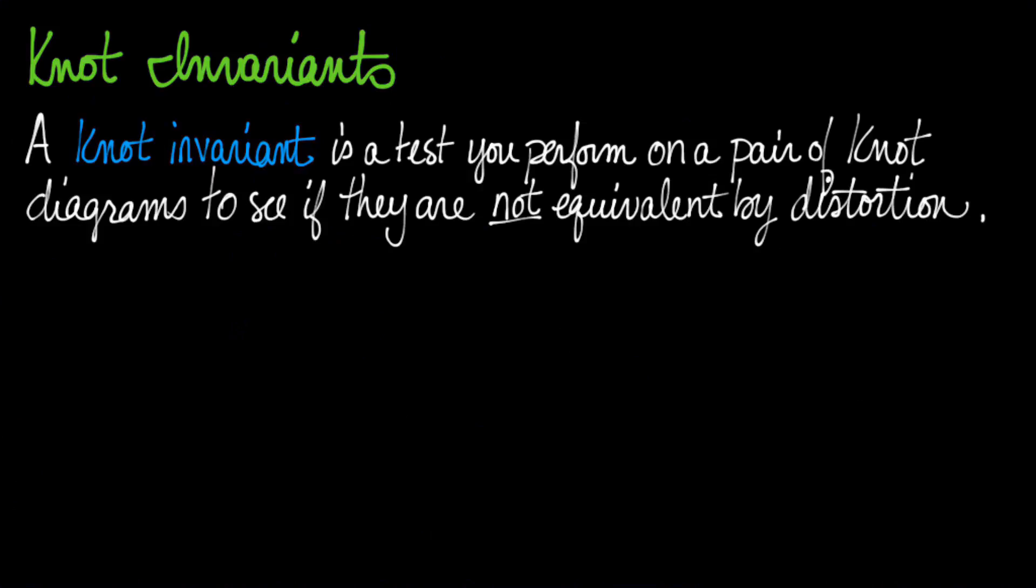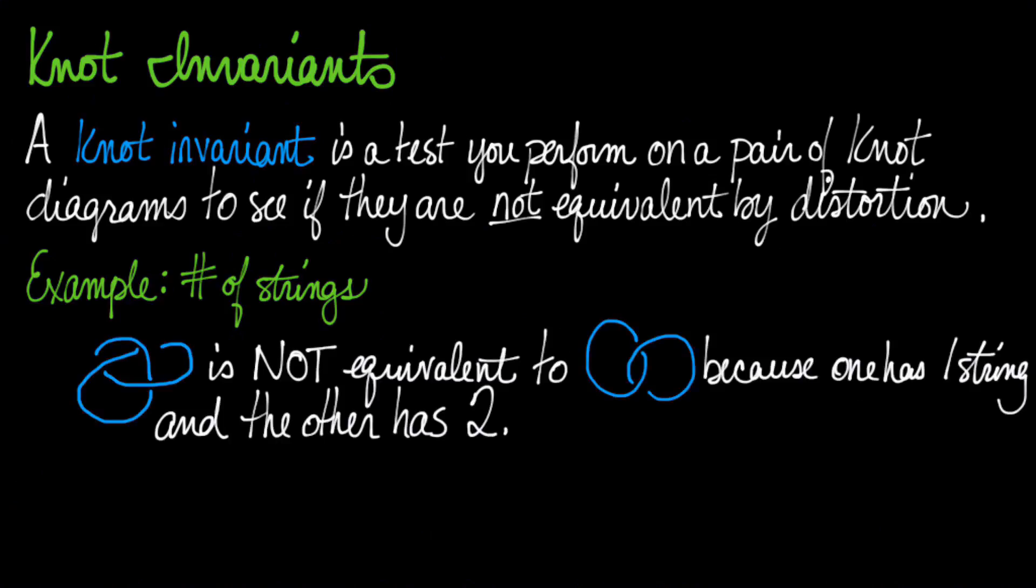These invariants can't tell you if the two shapes are the same. They can only tell you if they're different. And so here's a really easy example to understand. The number of strings in the diagram—you cannot possibly change the number of strings in the diagram without cutting or gluing.